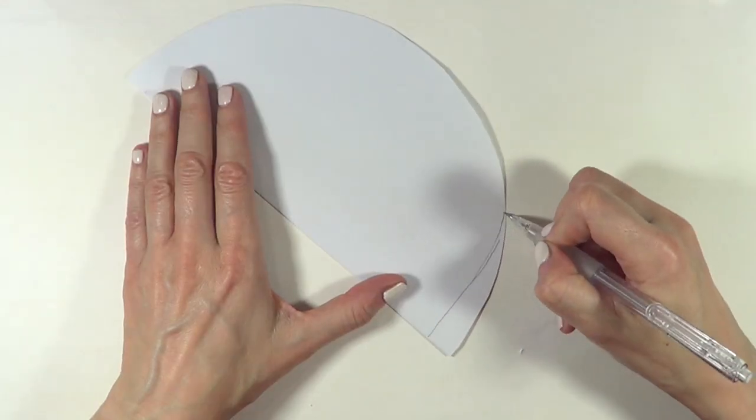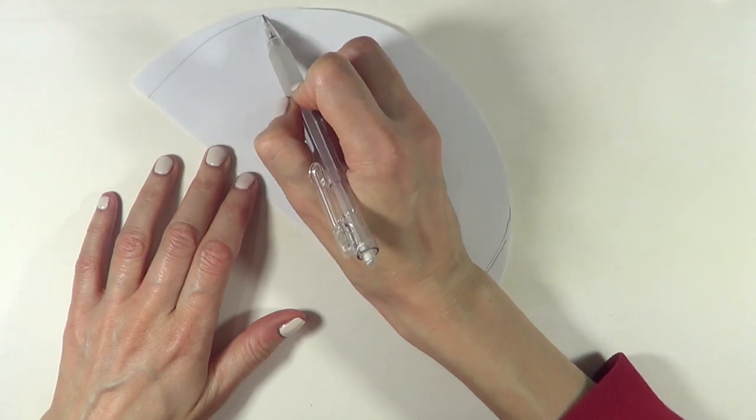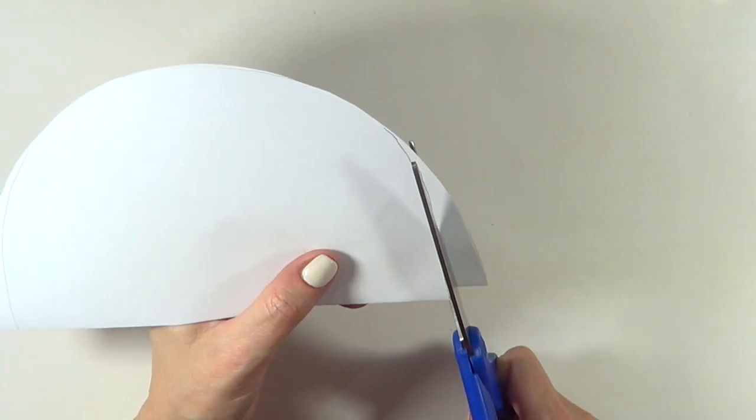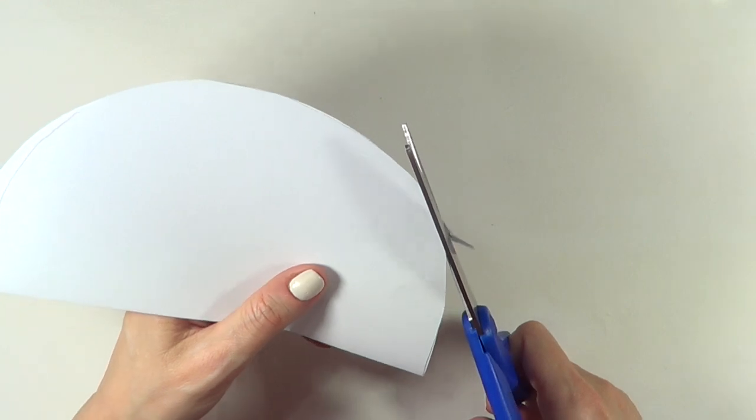I'm going to get rid of the roundness of it by doing two curved lines, if that makes any sense. And then I'm just going to cut it and then I'm going to continue with the face.